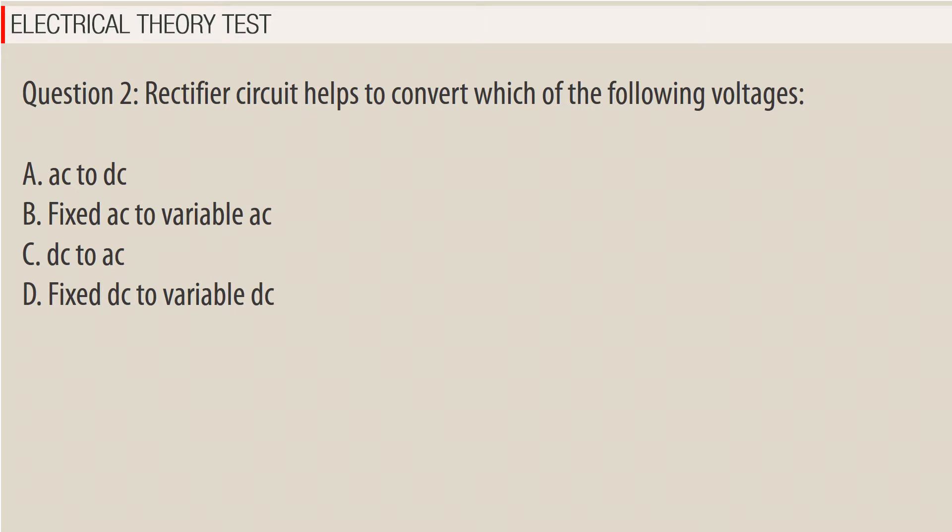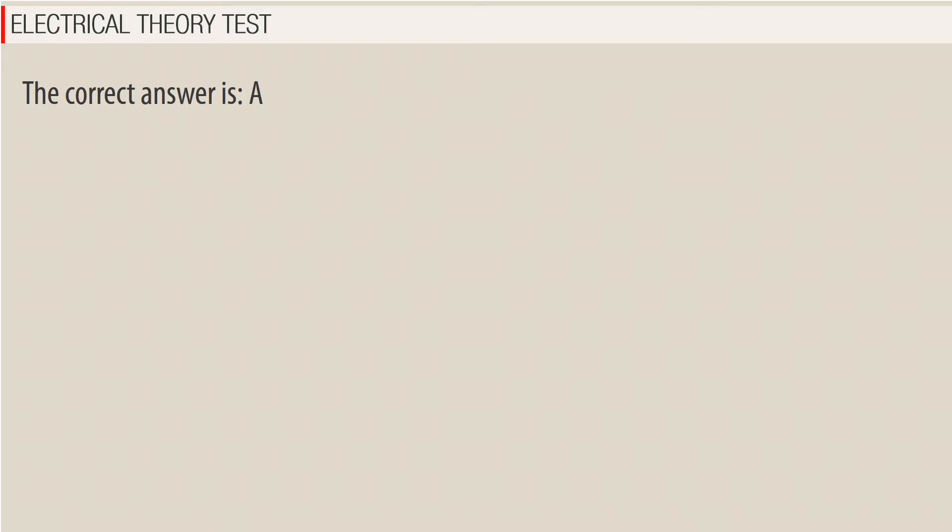Question 2. Rectifier circuit helps to convert which of the following voltages? A. AC to DC. B. Fixed AC to variable AC. C. DC to AC. D. Fixed DC to variable DC. The correct answer is A — AC to DC.